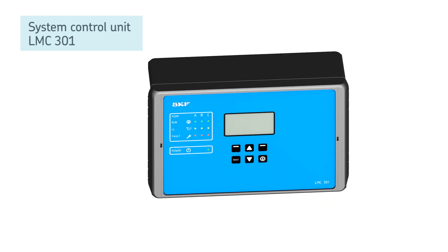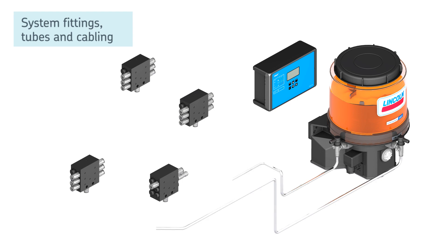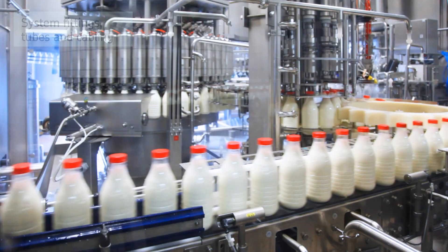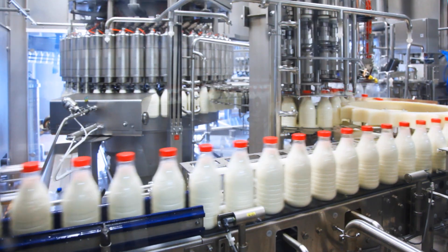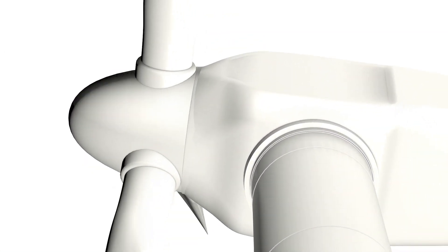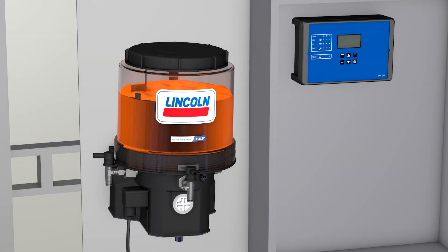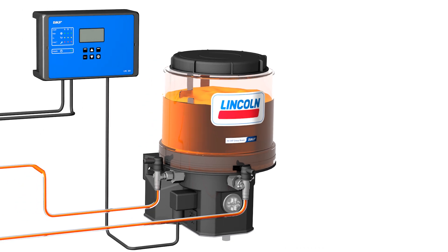Tubing, fittings and cabling complete these reliable systems, which are suitable for small to medium-sized machines with dispersed lubrication points that require varying lubrication quantities.